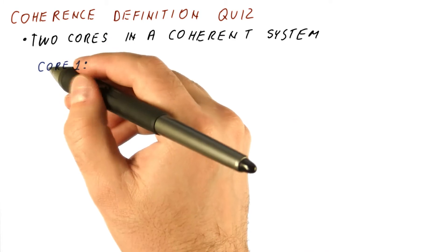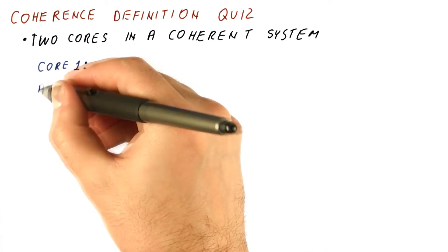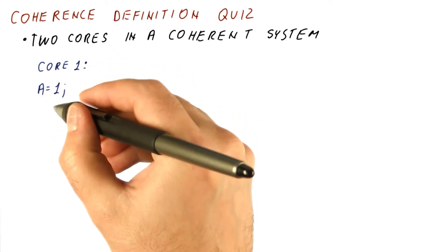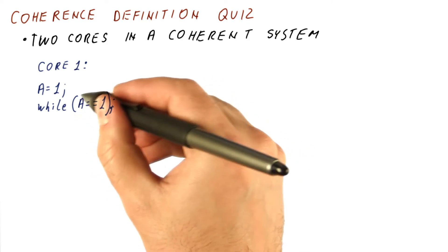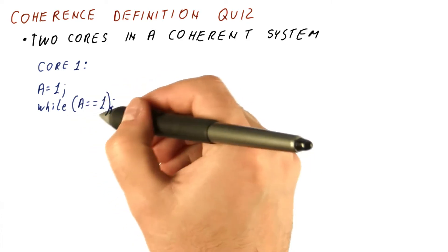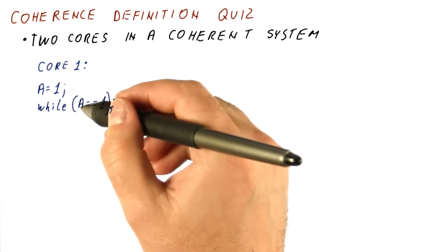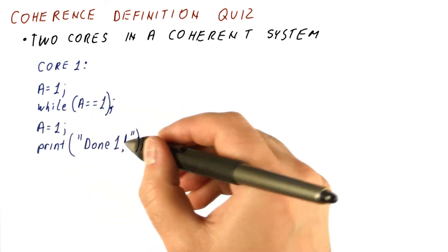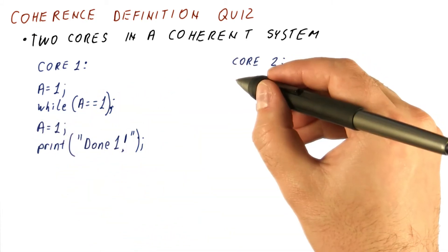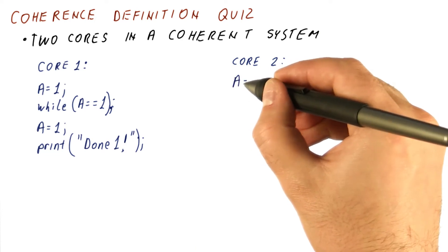Let's say that core one executes this program. It sets A to one, then waits for A to change from one. So it's going to loop here as long as A is equal to one. Sets A again to one, and then prints done one.